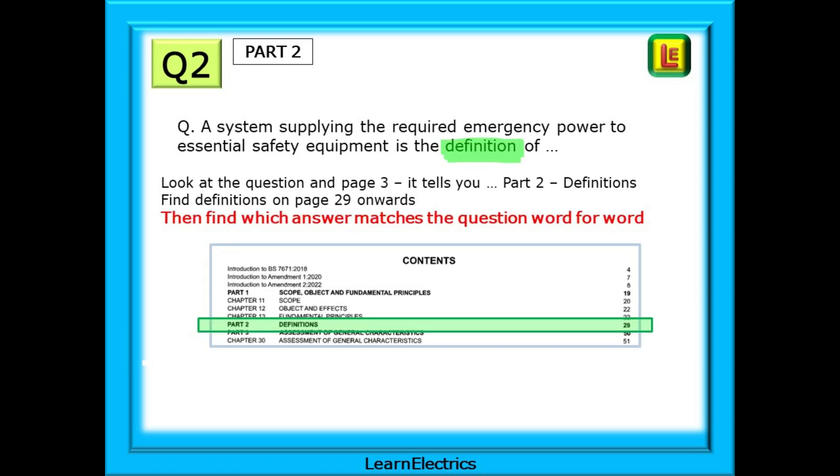Look at the question and at page 3. The question tells you that it is definitions and page 3 shows you that part 2 definitions begins on page 29. Let's go there now and find which answer matches the question word for word.